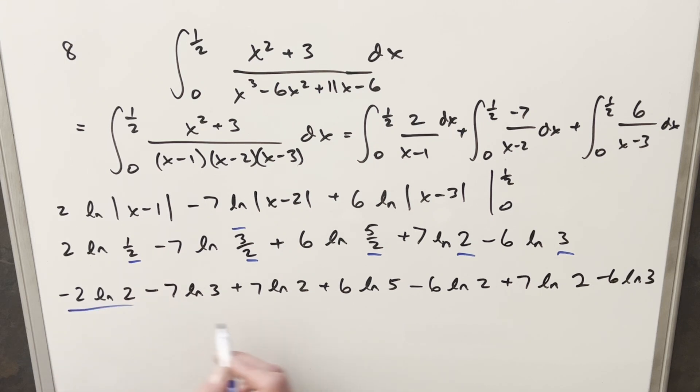Then I'm just going to group all my ln(2)'s. Okay, so that's going to give me, this is 7 - 6 is 1, plus 7 is 8, minus 2, so I'm going to have 6 ln(2) right here. And then I only have one ln(5), so I'm going to write this plus 6 ln(5). And then for ln(3)'s, I just have this one and this one. So I get -7 - 6, so I have -13 ln(3).